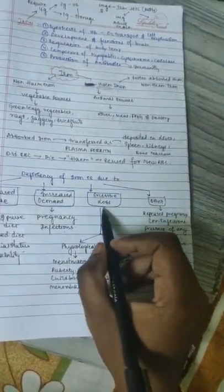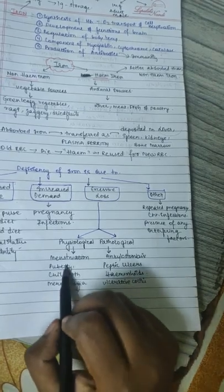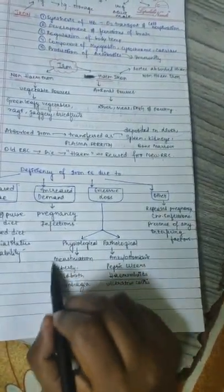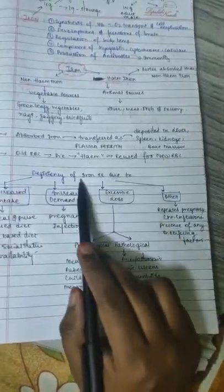Excessive loss may be due to physiological or pathological causes. Physiological causes may be like menstruation, puberty, childbirth, and menorrhagia. During these conditions, there may be excessive blood loss, leading to deficiency of iron.